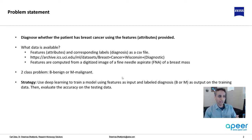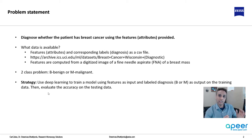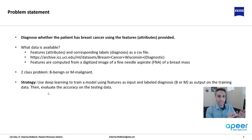Our X would be all the features that are provided and our Y would be the output — is it benign or malignant? This is a binary case, so we'll have an output that tells us whether it's benign or malignant. Then we are going to train it using our training data. We will divide this entire dataset into training and testing. The training model will never see the testing data.